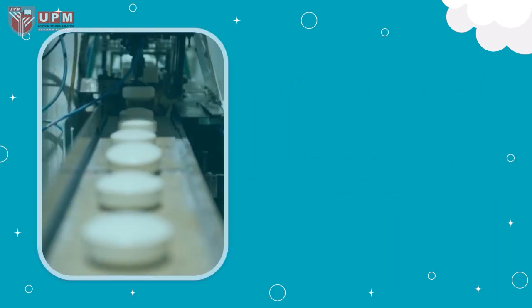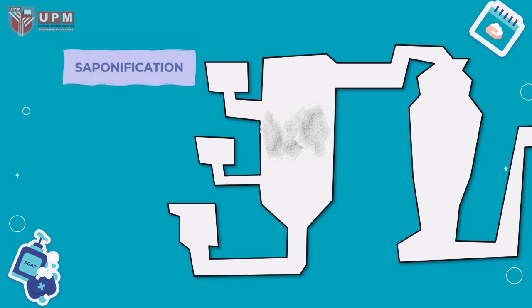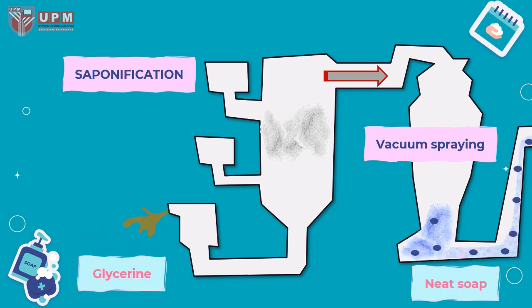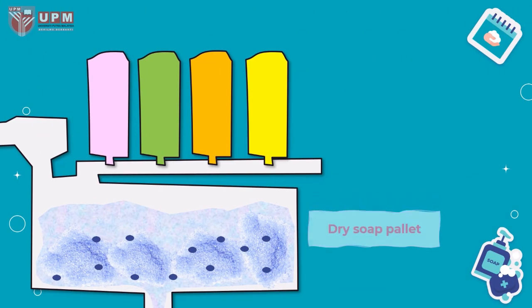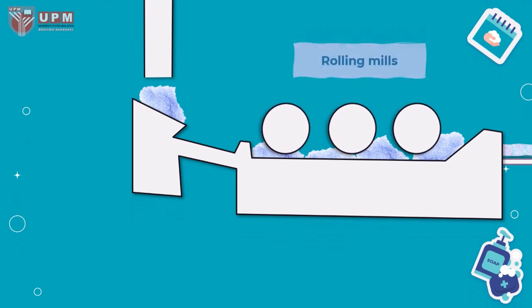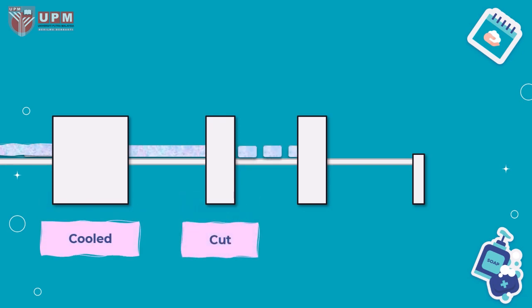Soap manufacturing. First, fats and alkali will be mixed together, then heated or boiled and undergo the saponification process. There are several processes to produce neat soap and segregate glycerin, such as classical boiling process, continuous process, hydrolyzer process, cold process, and semi-boiled process. Next, it will be treated with perfumes, colors, and special additives such as vitamins and disinfectant effects. Lastly, it will be cooled in frames, cut into size, and stamped.